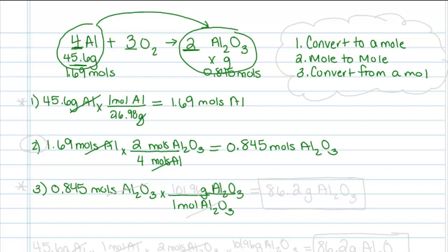To calculate that, we go back to our periodic table and determine our molar mass to be 101.96 grams of aluminum oxide. When I multiply that by the fact that that is in one mole, but there are only 0.845 moles, so I actually only have 86.2 grams of aluminum oxide. And that is my final answer.